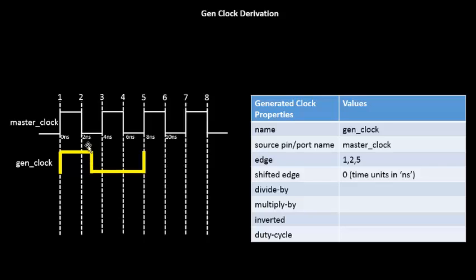The fall edge is at 3 nanoseconds and the second clock edge comes at 2 nanoseconds, so the answer is 1 nanosecond. The fall edge of the GenClock is shifted by 1 nanosecond from the second edge of the master clock. Finally, the second rising edge comes at the fifth edge and is shifted by zero nanoseconds. The values for the remaining entries will all be none. This is how you represent this kind of waveform using this structure.